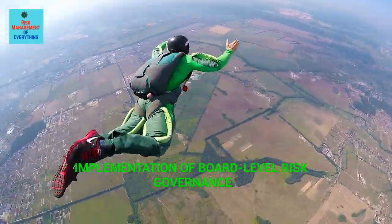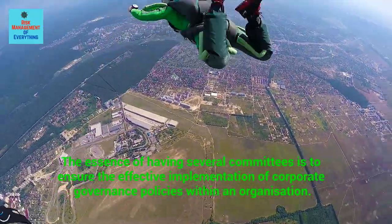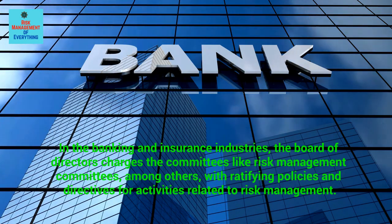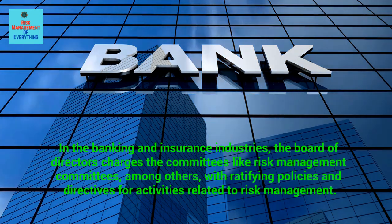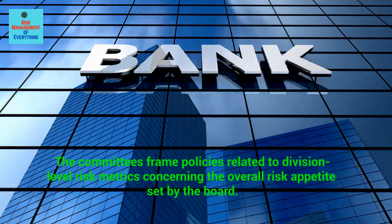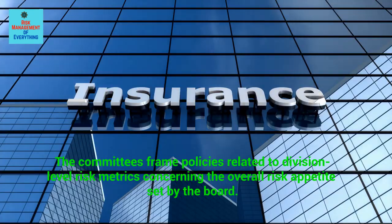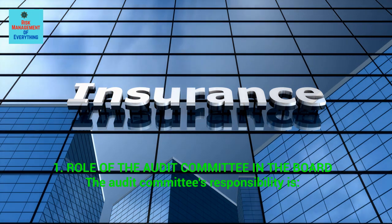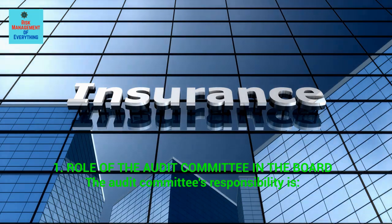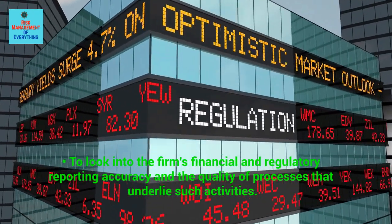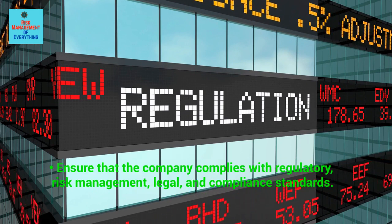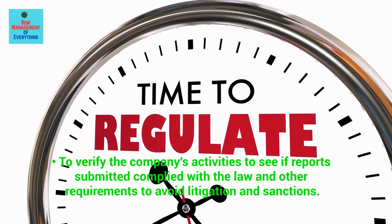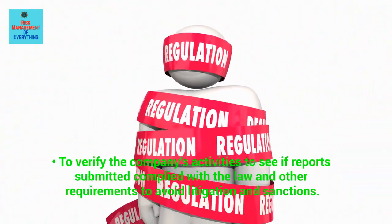Implementation of board-level risk governance. The essence of having several committees is to ensure the effective implementation of corporate governance policies within an organization. In the banking and insurance industries, the board of directors charges committees like risk management committees with ratifying policies and directives for activities related to risk management. The committees frame policies related to division-level risk metrics concerning the overall risk appetite set by the board. Role of the Audit Committee: the Audit Committee's responsibility is to look into the firm's financial and regulatory reporting accuracy and the quality of processes that underlie such activities, and to ensure that the company complies with regulatory, risk management, legal, and compliance standards.